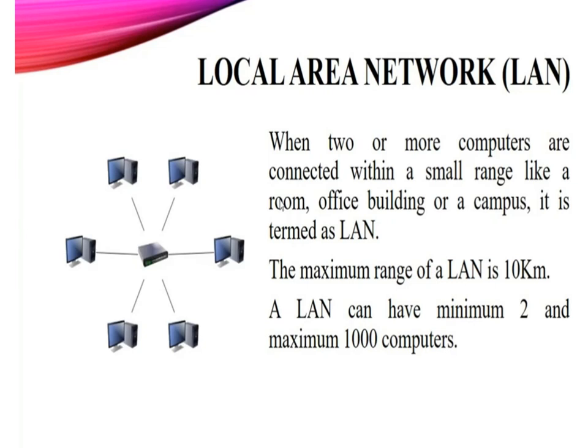Examples of WAN include the railway reservation system and ATMs — you can do railway reservation from anywhere and use ATMs at any place. WAN shares data with the help of fiber optic cables and microwaves. As compared to all networks, Wide Area Network is having the maximum range — the name itself says Wide Area Network. So these are the four types of computer network: LAN, MAN, WAN, and CAN.